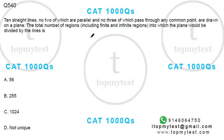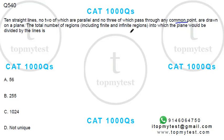It's a pretty interesting question on plane geometry, but basically it's a counting methods question. 10 straight lines, none of which are parallel, no three of which pass through any common point, are drawn on a plane. The total number of regions — including finite and infinite regions — into which the plane would be divided by the lines is how much?